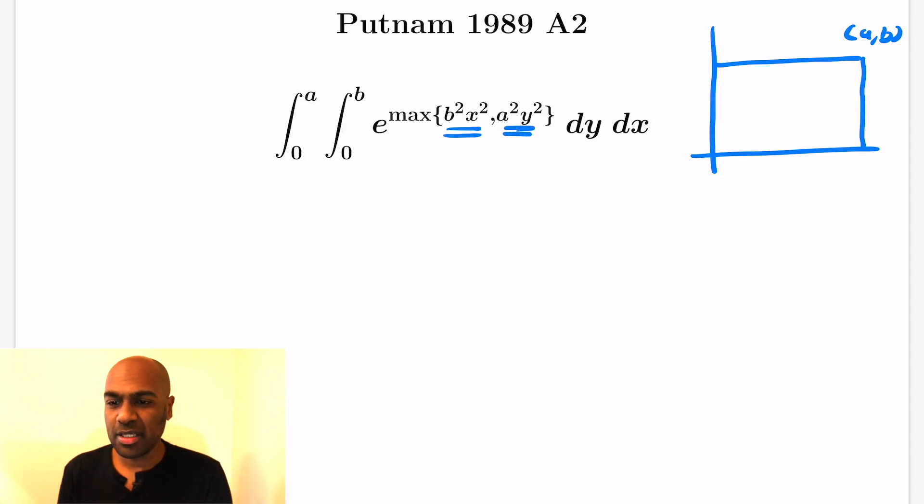Now the thing that's weird with this is the exponent of e. Let's look at when b squared x squared is actually the maximum. So this is when b squared x squared is greater than or equal to a squared y squared. And since our values are all positive, this is the same as saying that bx is greater than or equal to ay.